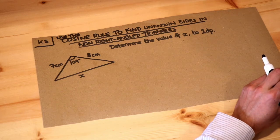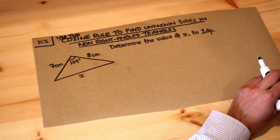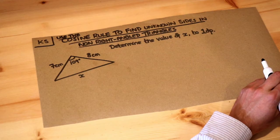Hello and welcome to Dr. Ross Mass's key skill video on using the cosine rule to find unknown sides in non-right-angle triangles.